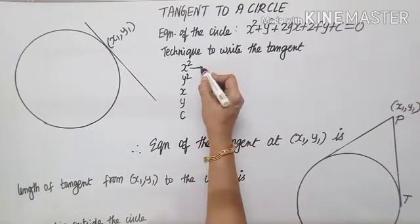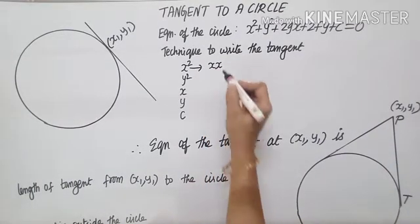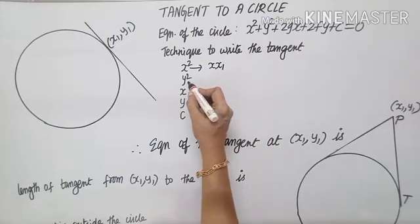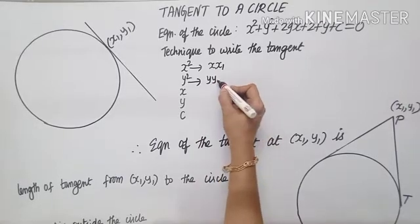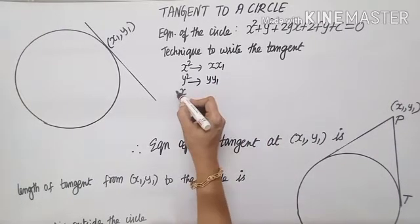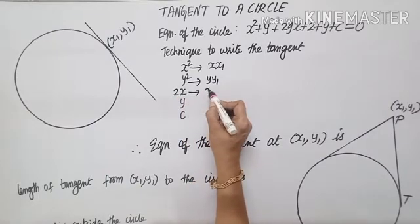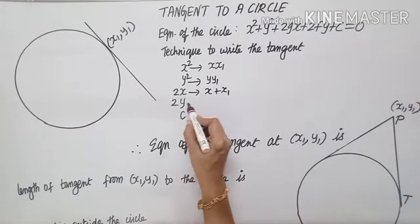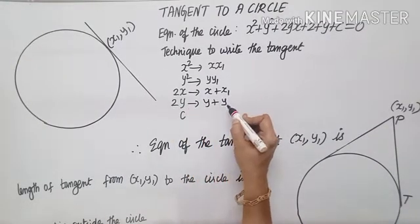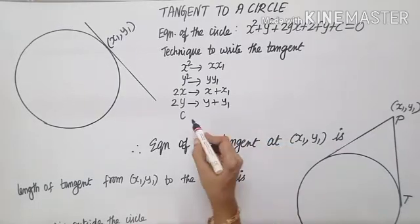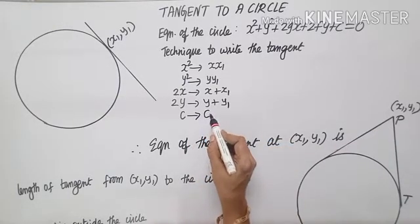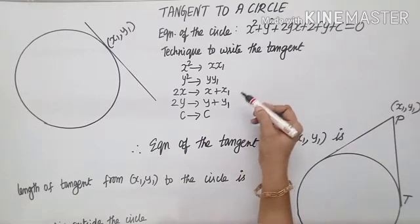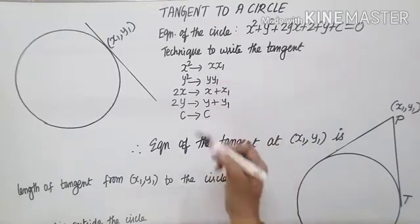If x square is there, I can write x square as x into x — one x you change as x1. y square is y into y — one y you change as y1. 2x means x plus x, so one x you change as x1. 2y means y plus y, so one y we change as y1. Constant, there is nothing to change, it remains as it is. Therefore, this technique helps us to write the tangent to any curve in geometry.